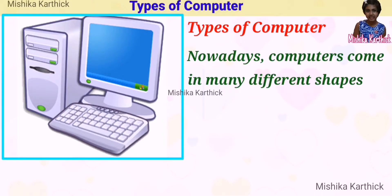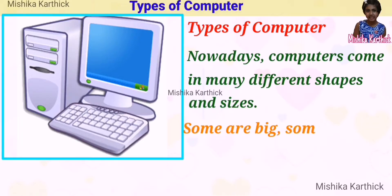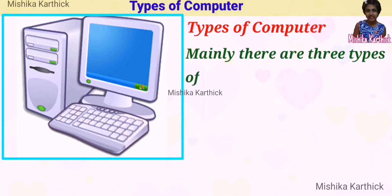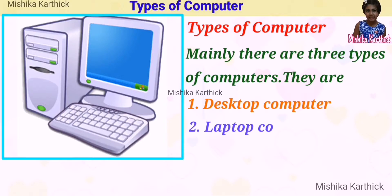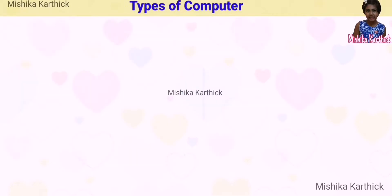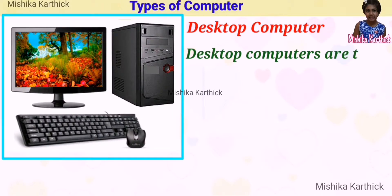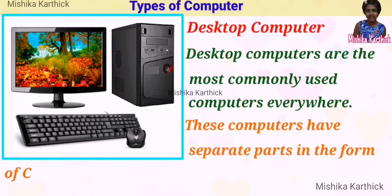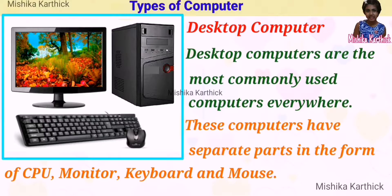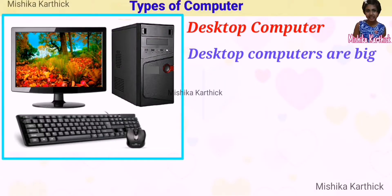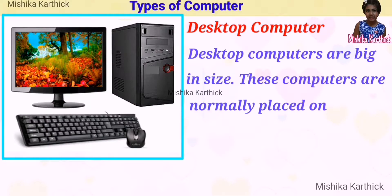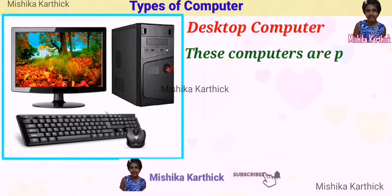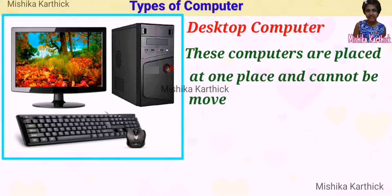Now, types of computers. Computers come in many different shapes and sizes. Some are big, some are medium size, and some are small. Mainly there are three types of computers: desktop computer, laptop computer, and tablet computer. Desktop computers are the most commonly used computers everywhere. These computers have separate parts in the form of CPU, monitor, keyboard, and mouse. Desktop computers are big in size and are normally placed on the desk. Therefore, their name is desktop computers. These computers are placed at one place and cannot be moved here and there easily.